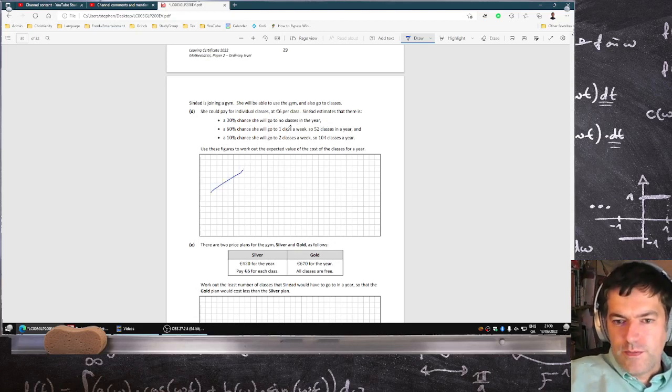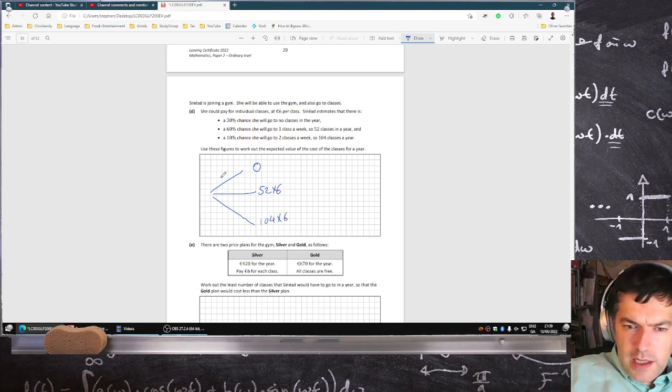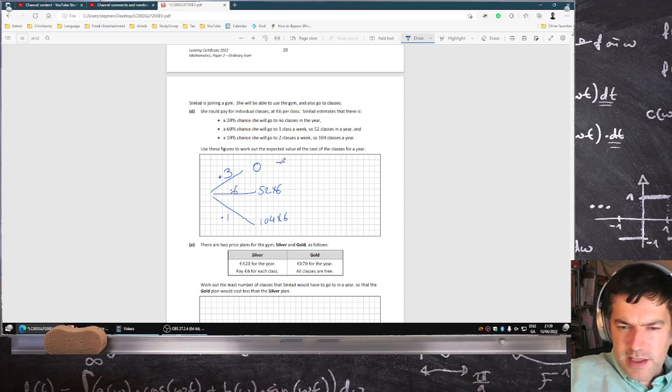Okay, so either no classes, so no cost, or 52 classes—so that's 52 times €6—or 104 classes times €6. And this is 0.3, 0.6, 0.1. So what you do is multiply the probabilities by their outcome values.